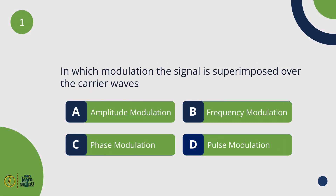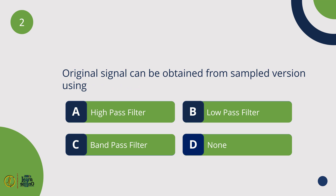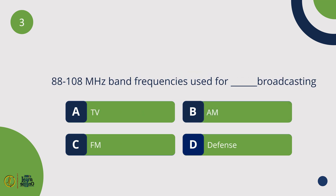In which modulation is the signal superimposed over the carrier waves? Amplitude modulation. The original signal can be obtained from a sampled version using a low-pass filter. The 88 to 108 MHz band frequencies are used for FM broadcasting.